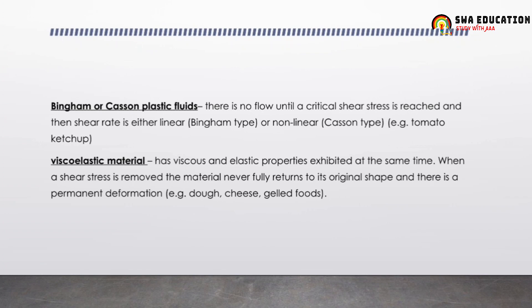Viscoelastic material is both viscous and has elastic properties exhibited at the same time. When a shear stress is removed, the material never returns fully to its original shape — there is permanent deformation. Examples include dough, cheese, and gels. For instance, chapati dough when given a force will never get back to its original shape.